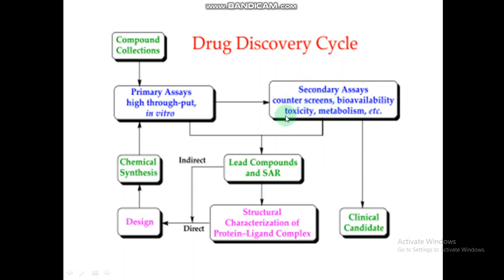For ADMET profile testing, we have two methods: one is computational, using the SwissADME tool — we have a video on that on the YouTube channel — and the second is preclinical testing or in vitro/in vivo testing in the lab using animal models like guinea pigs, monkeys, or rabbits to test compounds for toxicity, absorption, distribution, metabolism, and excretion. In this way, our drug discovery process completes and finally we get our drug marketed or commercialized.